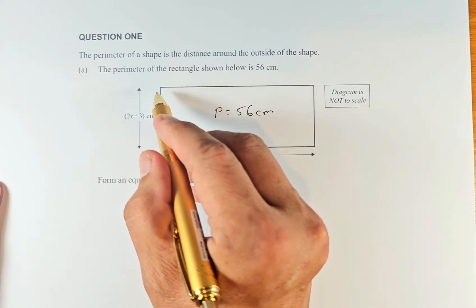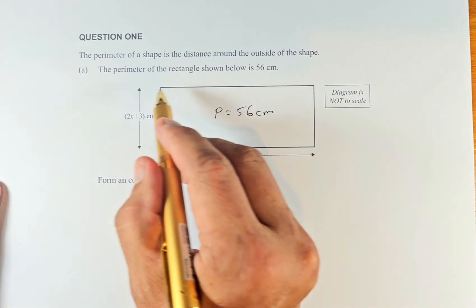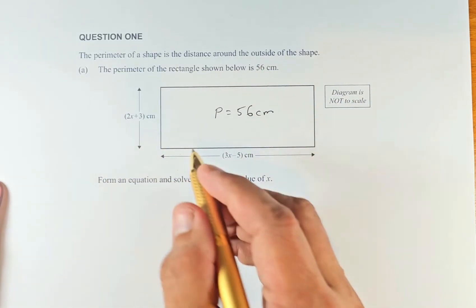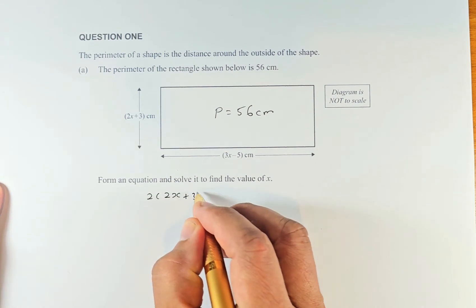The perimeter is 2x plus 3, plus 2x plus 3, plus 3x minus 5, plus 3x minus 5. Instead of writing that, we can put twice of 2x plus 3.